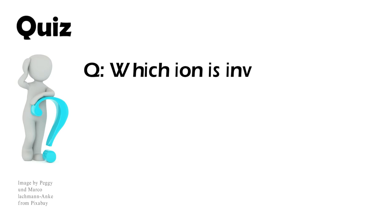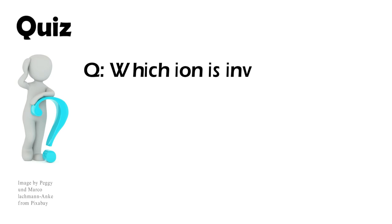Let's solve a quiz. Question: Which ion is involved in the green color of dioptase? Answer: It's the copper divalent cation.